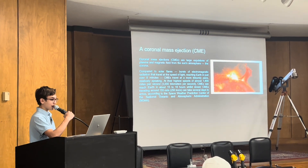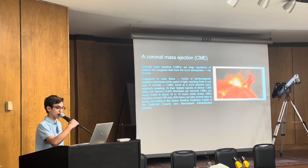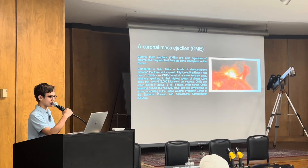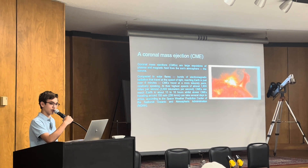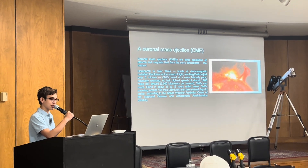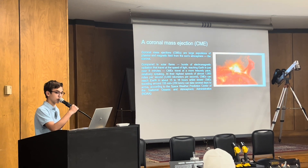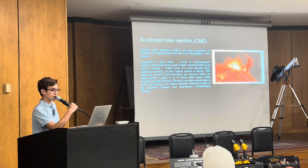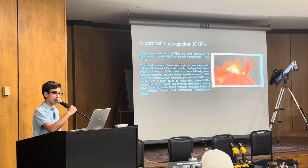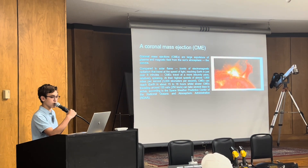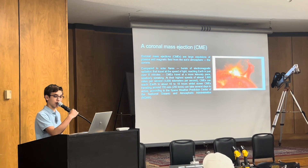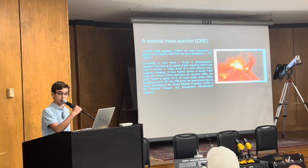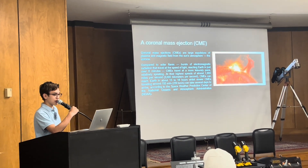A coronal mass ejection is a bit different from regular solar wind. A coronal mass ejection can unleash huge amounts of matter and electromagnetic radiation into space above the sun's surface. The ejected material is plasma containing electrons and protons, moving at speeds in the region of 600 kilometers per second. When this interacts with the Earth's magnetic field, it can cause magnetic field fluctuations that generate rogue electric currents in power transmission lines, submarine communication cables, and cross-country pipelines. If large enough, these electrical currents can have substantial effects.